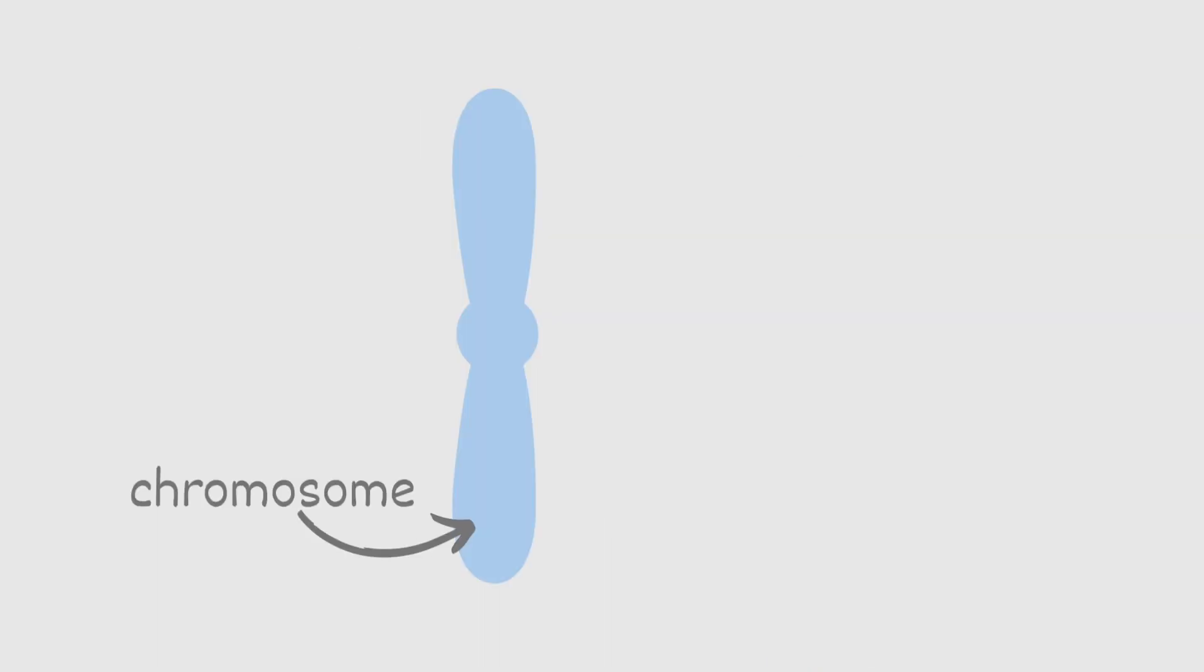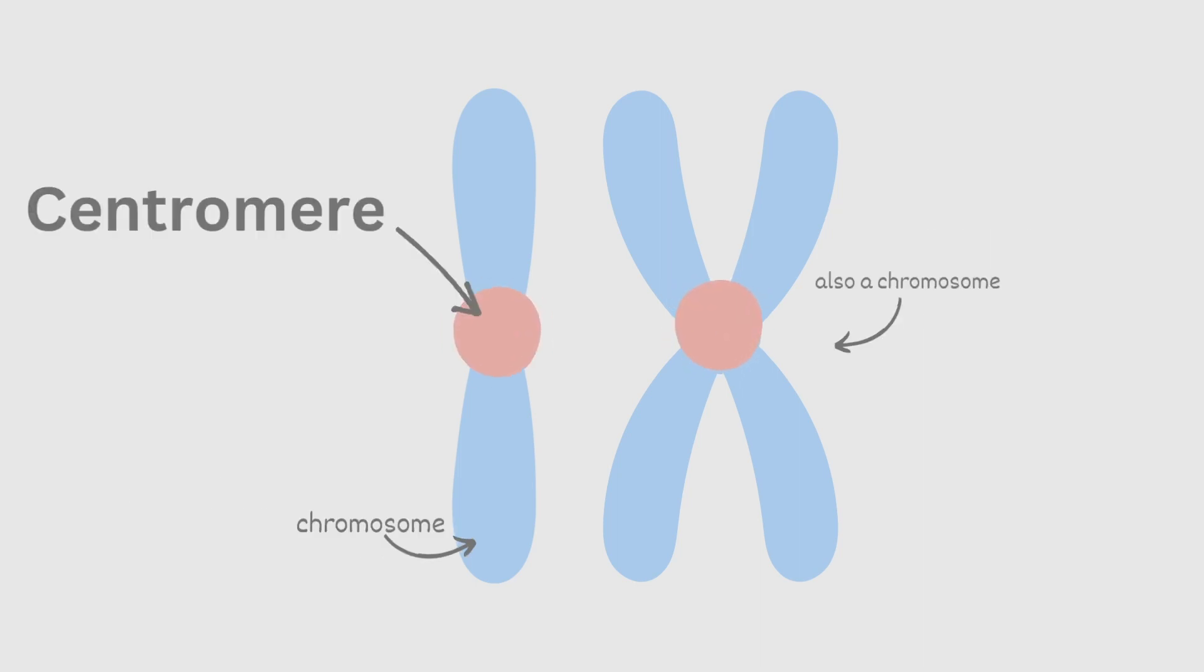I want to make sure everyone has a solid understanding of what a chromosome and a chromatid are. Here we have a chromosome and here we also have a chromosome. You see, chromosomes can come in different shapes and commonly are seen like these two here. This circle in the center of the chromosome is called a centromere. This centromere determines how many chromosomes are present. One centromere equals one chromosome.